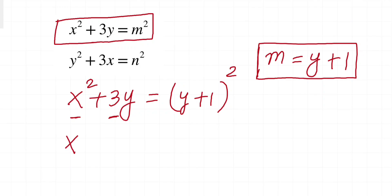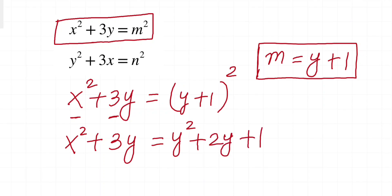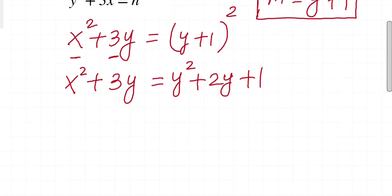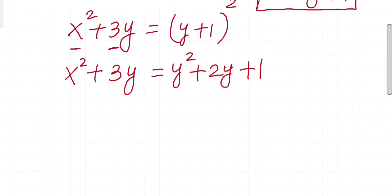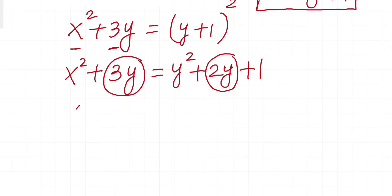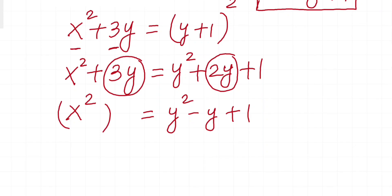See: (y + 1)² = y² + 2y + 1. Now if you see carefully, this 2y and 3y will cancel each other, so you get x² = y² - y + 1. Now I will multiply both sides by 4.